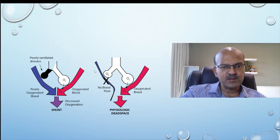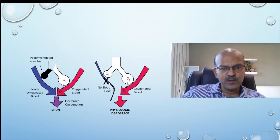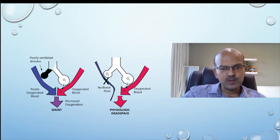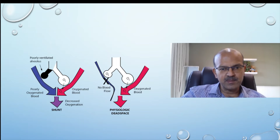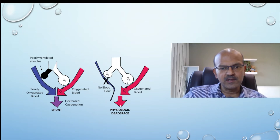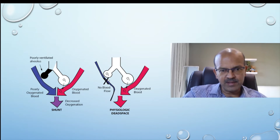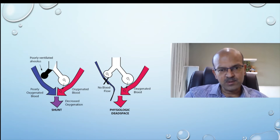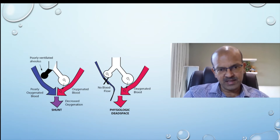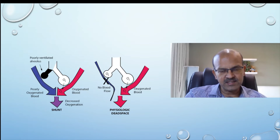In the opposite scenario, the alveolus has oxygen but blood flow is not coming through. The reduction in oxygenation happens with overall oxygen content dropping. This leads to physiologic dead space, because oxygen is present in the alveoli but is not taking part in gas exchange. If this happens over a large surface of the lung, you may also have problems with CO2 retention.